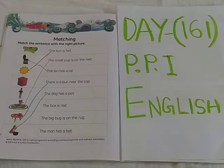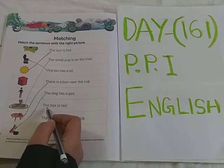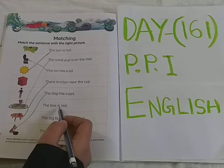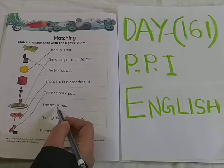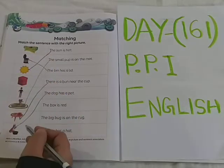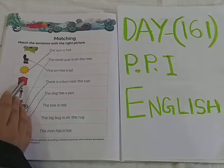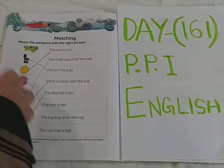See the next sentence now. Read it. T-H-E — The. B-O-X — Box. I-S — Is. R-E-D — Red. The box is red. Tell me, where is the red color box here? The box is red. You can see this — the box is red. So the sentence is matching with the picture.